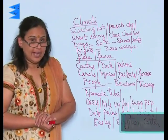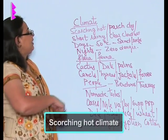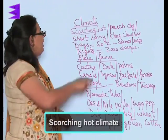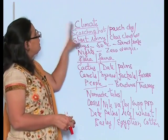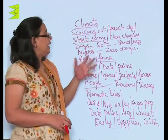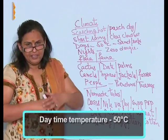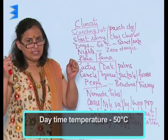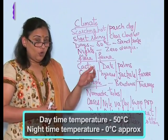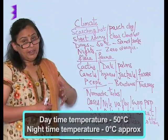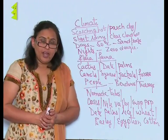Now let's talk about the climate of the Sahara Desert. Since it is a hot desert, the climate here is scorching hot, parched dry, and it has a short rainy season. The sky is clear and cloudless. In the daytime, the temperature soars to as much as 50 degrees centigrade, heating up all the sand and rocks. But in the night, it is freezing cold — the temperature goes to nearly 0 degrees centigrade. That is the extremity of the Sahara Desert climate.